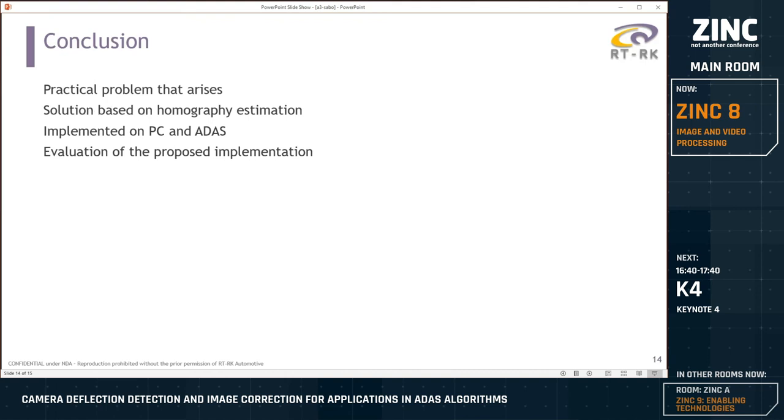In conclusion, the automotive camera deflection from reference position can be a practical problem that arises during the vehicle operation. The approach that I had was based on homography estimation and nearest neighbor interpolation. The solution was implemented for the ADAS Alpha board, and after implementation, evaluation was done that shows certain correction of captured image. The solution is not ideal and it requires a lot of work. Code optimization still needs to be done, and I think that will help with better results.